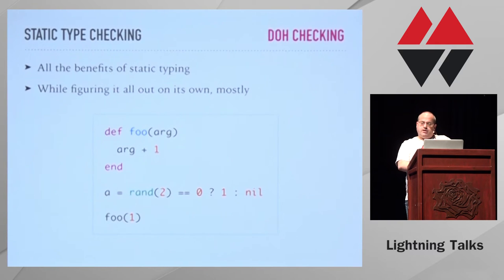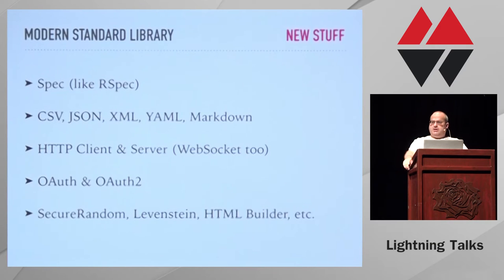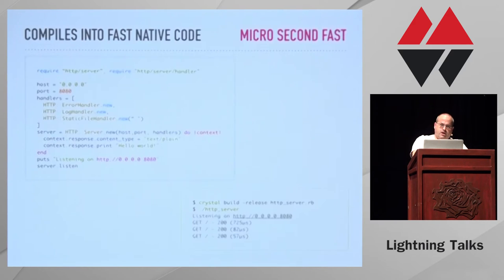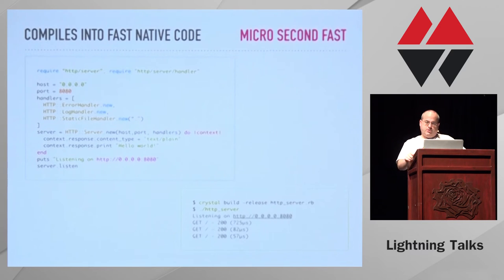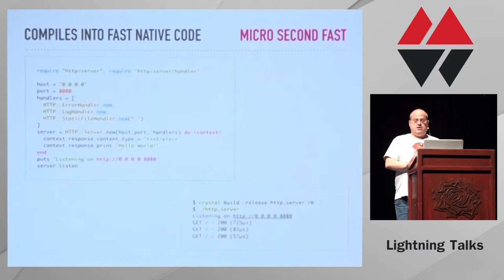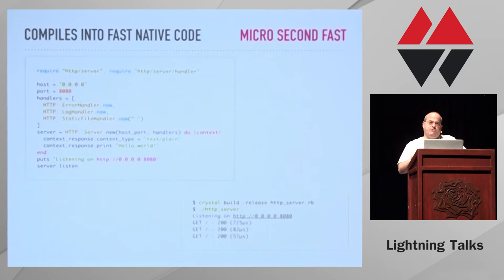Crystal has a modern standard library with all the cool new stuff already baked in - things like spec that's very similar to RSpec, CSV, JSON, XML, YAML, Markdown, HTTP clients and servers including WebSockets built in, OAuth, OAuth2, HTML builders. All kinds of things already built into the language. It compiles into fast native code - microsecond fast. A very basic HTTP server ran in 725 microseconds the first time, and every single time after that it was well below 100 microseconds. It's refreshing to see how fast programs boot and run.